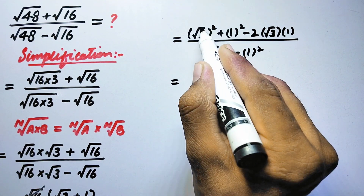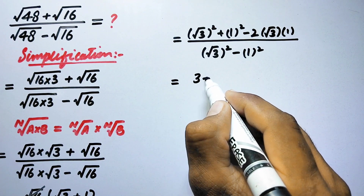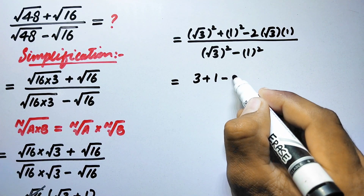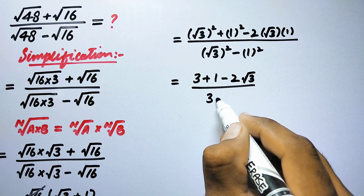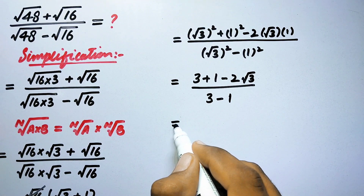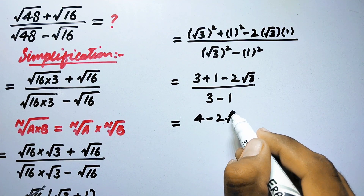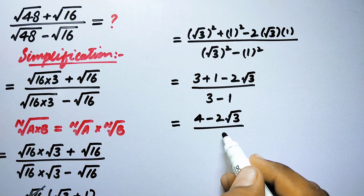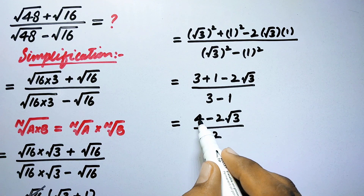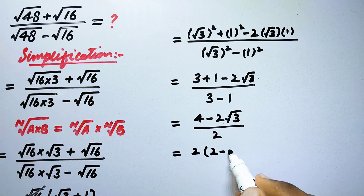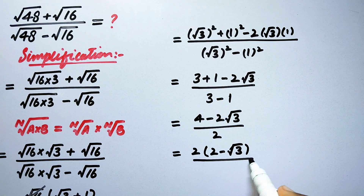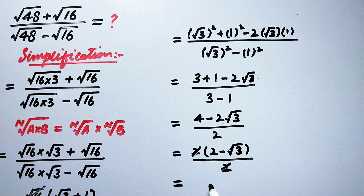The square root and the square cancel, so the numerator becomes 3 plus 1 plus 2 times square root of 3, and the denominator becomes 3 minus 1, which equals 2. This gives us 4 plus 2 times square root of 3 divided by 2. We can take 2 as a common factor from the numerator, giving 2 times (2 plus square root of 3) over 2, and the 2 cancels.